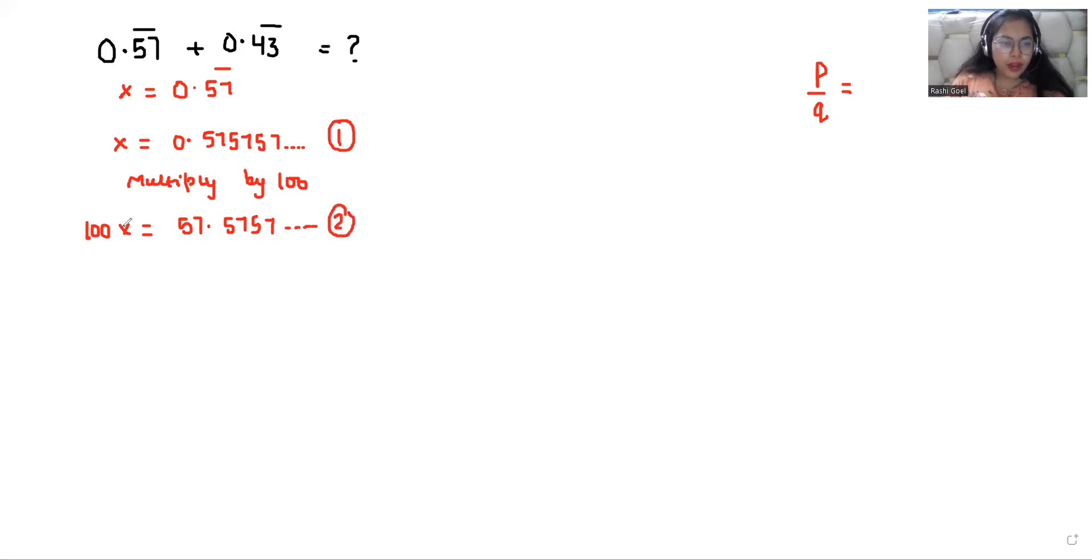Now I'm going to subtract equation number two minus one. So 100X minus X is 99X on LHS side, and 57 minus 0 is 57 and all the decimals will eliminate themselves. So only 57 will be left. So the value of X is 57 by 99.